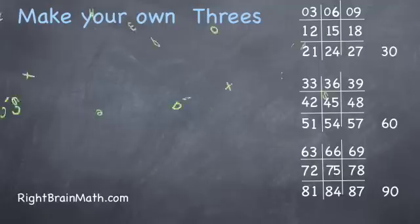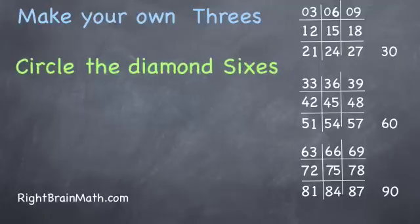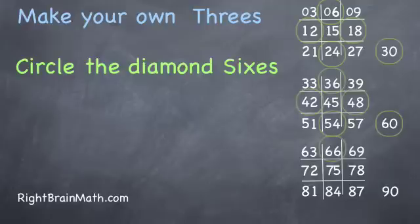Then you can find the sixes by circling the diamond pattern on the numbers on the right. Six, twelve, eighteen, twenty-four, thirty, thirty-six, forty-two, forty-eight, fifty-four, sixty, sixty-six, seventy-two, seventy-eight, eighty-four, ninety. Real fast and easy.